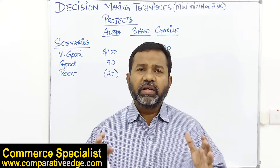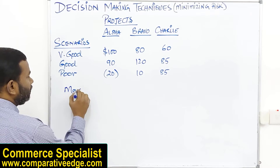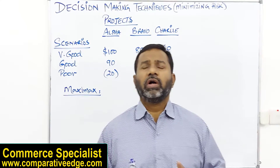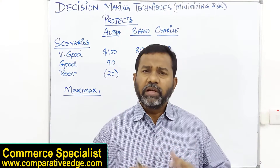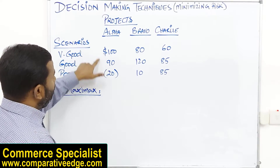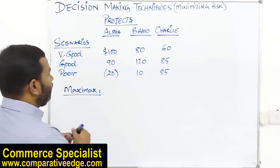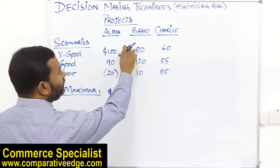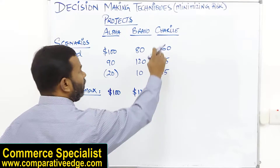The very first decision criteria is known as MaxiMax. This criteria is used by managers who are risk seekers — they want maximum profit come what may, they're willing to take the risk. Looking at Alpha vertically across the three scenarios, the maximum return Alpha can offer is $100. For Bravo, the maximum is $120.